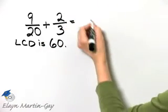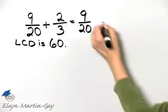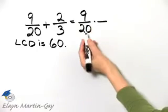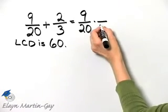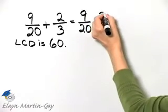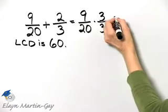Now we need to write each fraction as an equivalent fraction, but with a denominator of sixty. So we ask ourselves, twenty times what is sixty? Well, twenty times three is sixty, so we'll multiply the first fraction by three over three, and then plus.